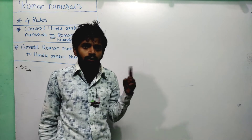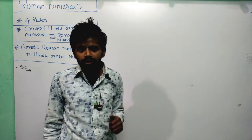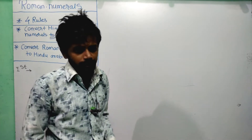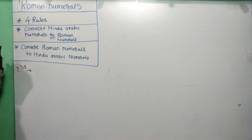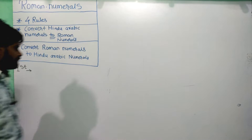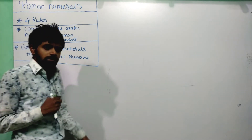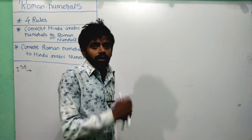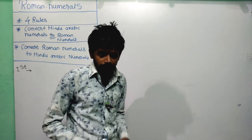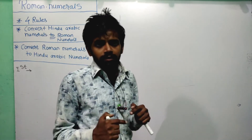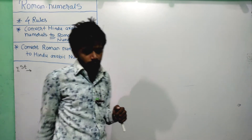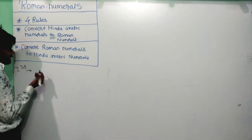Since there is no specific symbol for each number, we combine symbols to form numbers. The first rule is the Repetition Rule. If you repeat a Roman numeral symbol again and again, you add the value of each symbol to get the final number.